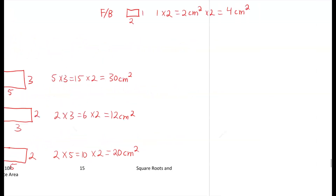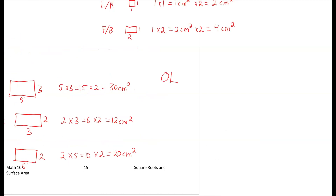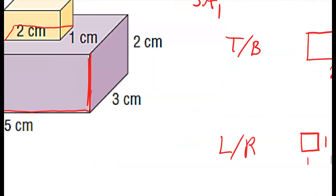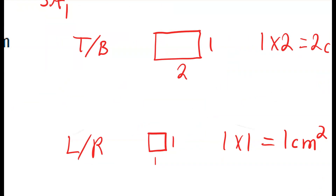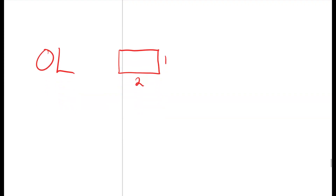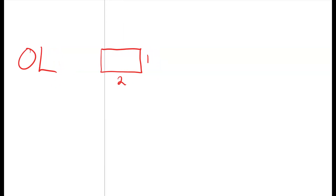The last part to calculate is our overlap. The overlap is on the bottom of shape one — the dimensions were 1 by 2. So 2 times 1 equals 2, and there's one overlap which is two different faces, so we times it by 2 to get 4 centimeters squared.